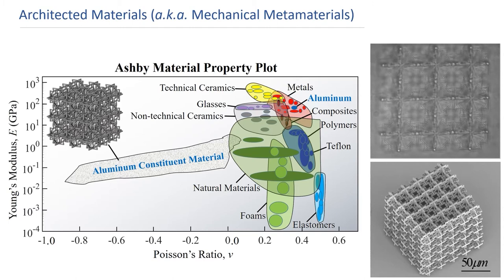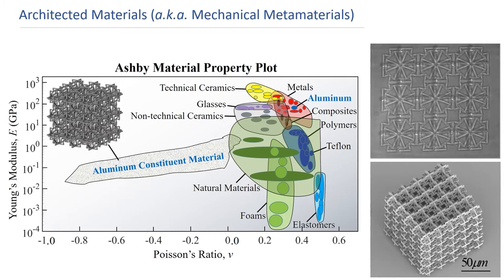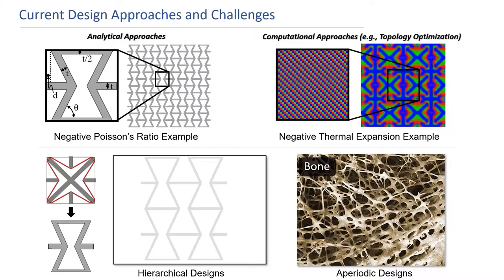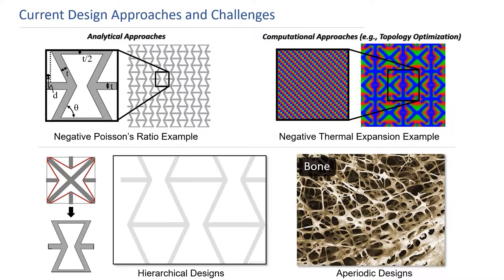If this lattice were made of aluminum, its performance capabilities would span far into the white space regions of this Young's modulus versus Poisson's ratio Ashby plot.